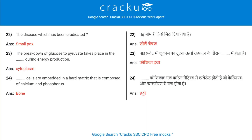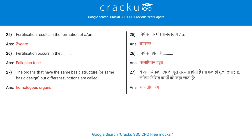The disease which has been eradicated is Smallpox. The breakdown of glucose to pyruvate takes place in the Cytoplasm during energy production. Dash cells are embedded in a hard matrix that is composed of calcium and phosphorus — Bone. Fertilization results in the formation of a zygote. Fertilization occurs in the fallopian tube.